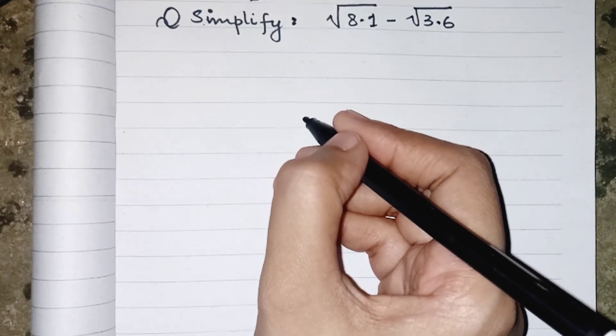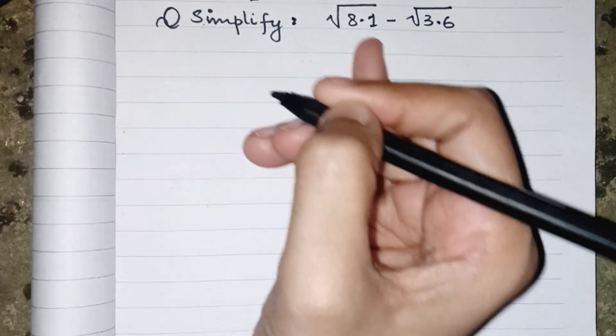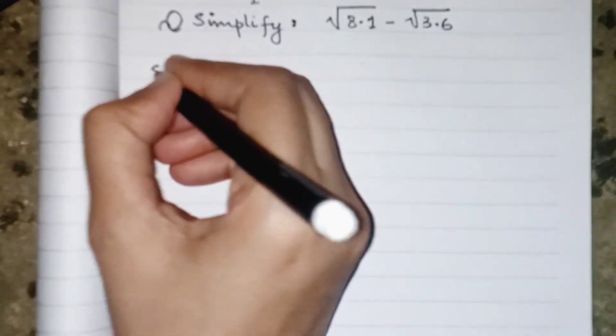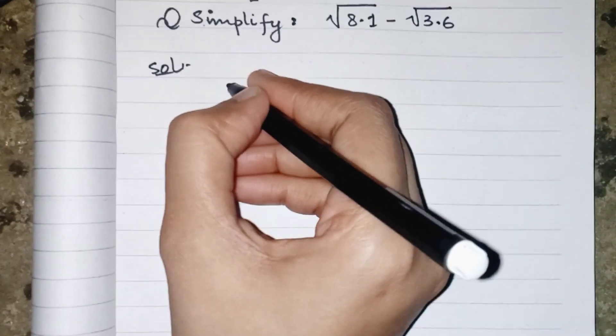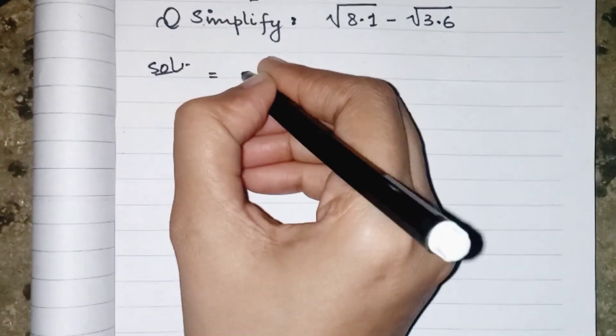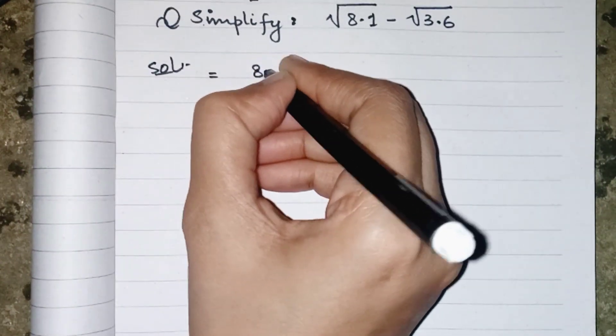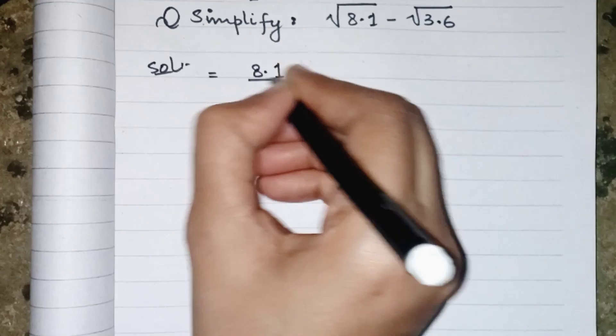Hello everyone, today we will learn how to subtract these root values. Now as we see, these root values are decimal values, so first of all we have to remove the decimal. Like we have a number 8.1, this one is a whole number which means it has a denominator as 1.